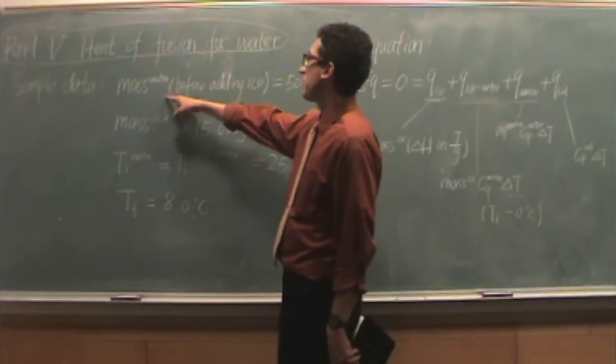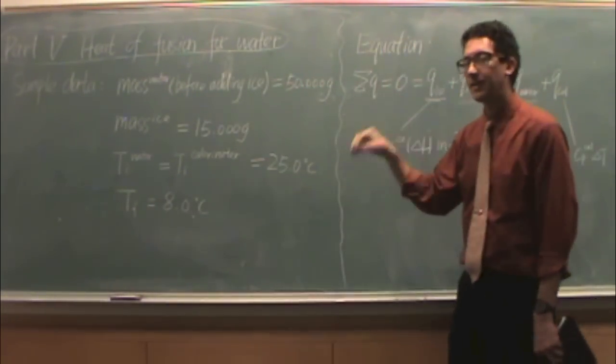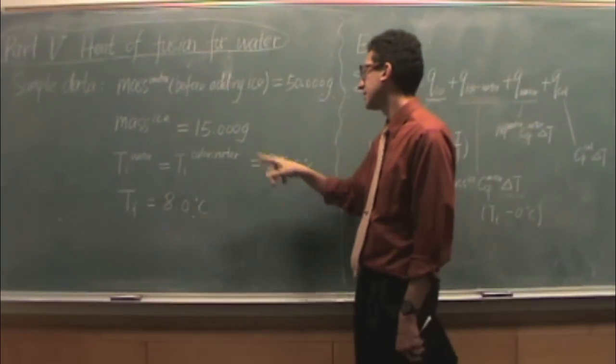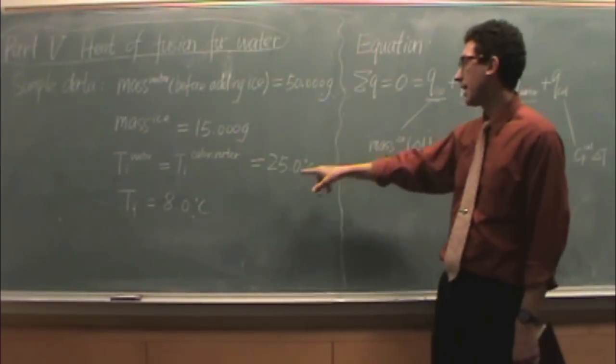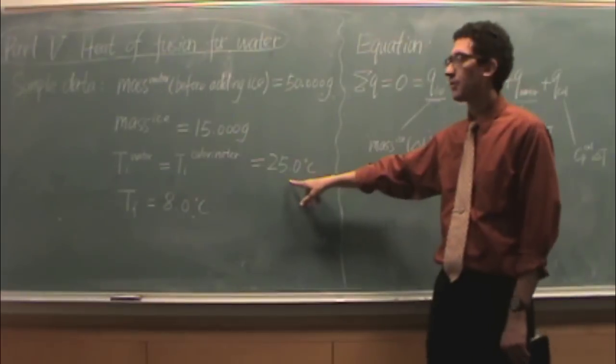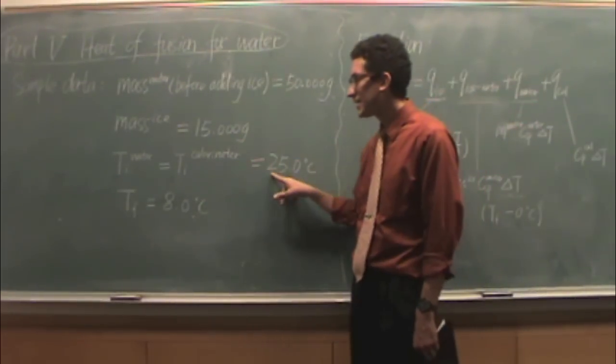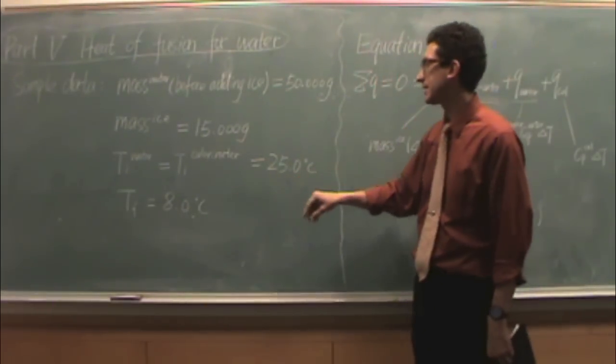So, you should have the mass of water before you have the ice in it. You should have the mass of ice, and you should also have the initial temperature of the water in the calorimeter, again the same. And then the final temperature of everything is the same.